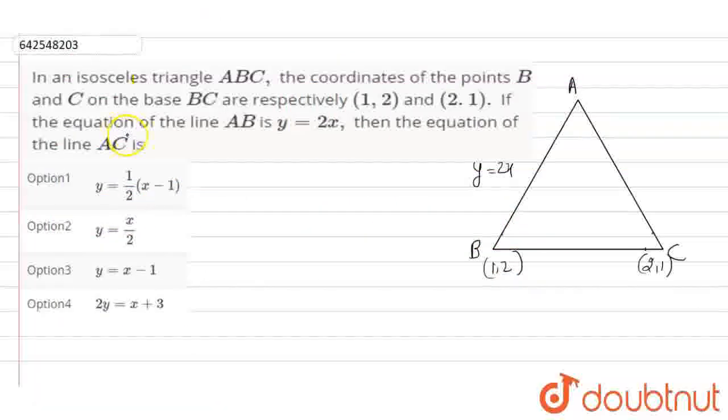In an isosceles triangle ABC, the coordinates of points B and C on the base BC are respectively (1, 2) and (2, 1). If the equation of line AB is y equals 2x, then find the equation of line AC.